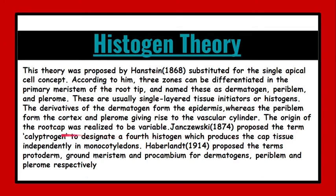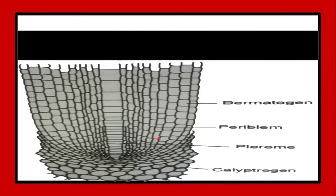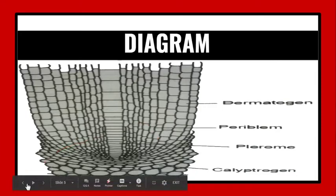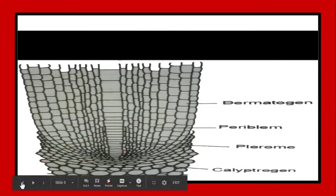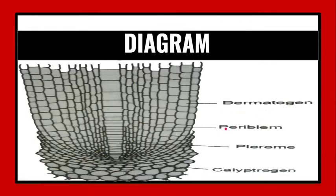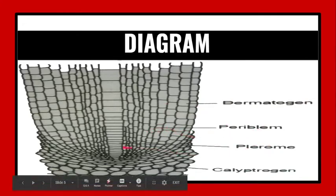Another botanist, Janczewski in 1874, proposed the term calyptogen which we can see in our next diagram, which is also known as the fourth zone.